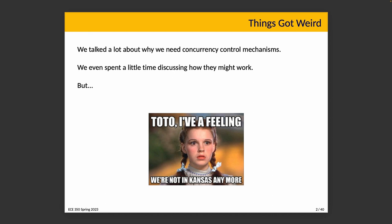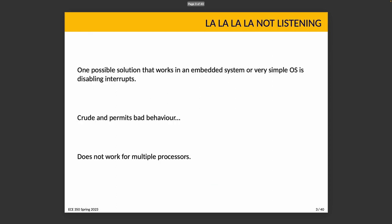Now we're in the operating systems course, so it's not enough to know just at a surface level how to use concurrency control constructs. Now we have to know much deeper — how do they actually work? One possible solution that could work in an embedded system or a very simple operating system is disabling interrupts.